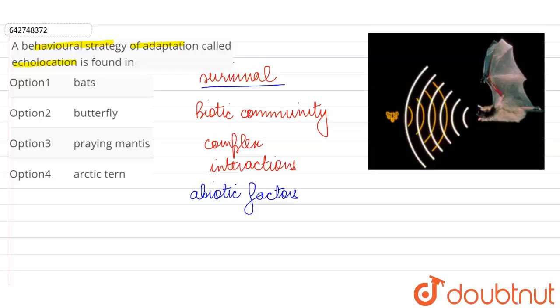For their survival, such adaptations which enable the organisms to adjust in their habitat or to survive in their surroundings, they might be of different types. It might be a morphological adaptation, it might be physiological, and as they have mentioned in the question, there might also be some behavioral modification.